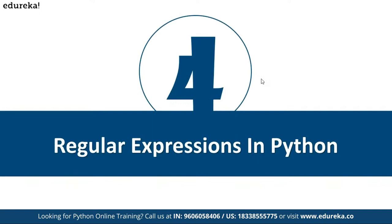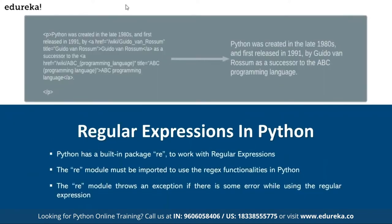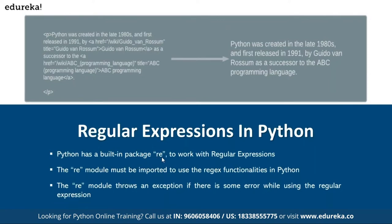Now how do we do regular expressions in Python? In Python, we have a module called 're' using which you can get regular expressions done. If there is an error it will throw an exception, but if there is no match it will just keep quiet — it will return an empty string. If there is a match, it will respond with some data. 're' stands for regular expression and it's a module or library in Python.